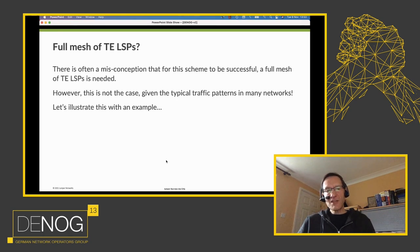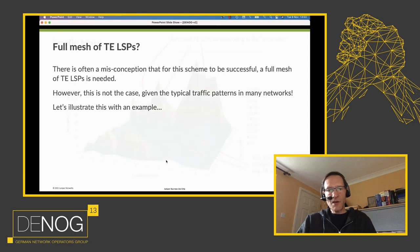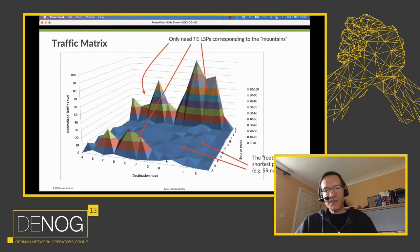There's an interesting misconception: sometimes people think that for this type of scheme to be useful you need a full mesh of traffic-engineered LSPs between all your edge routers — a full mesh of SR LSPs or RSVP LSPs. But that's not actually the case, because of the typical traffic patterns you get in the vast majority of networks.